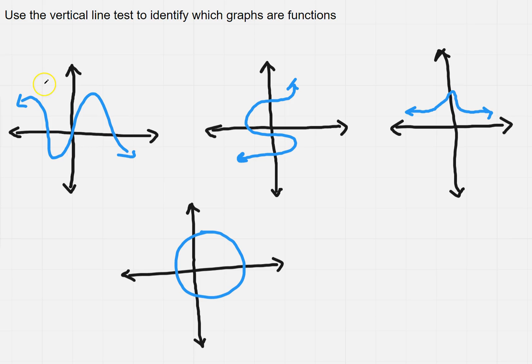So if I draw a vertical line anywhere on the first one it goes through one point. I can test it to see if it happens again. So the fact that it only goes through one point, this is a function.